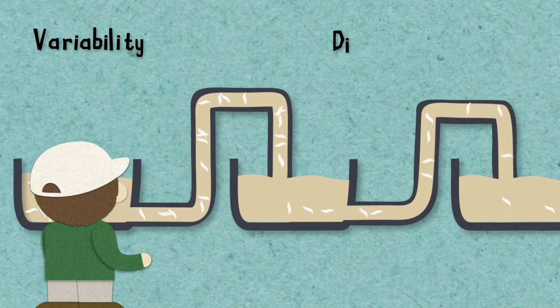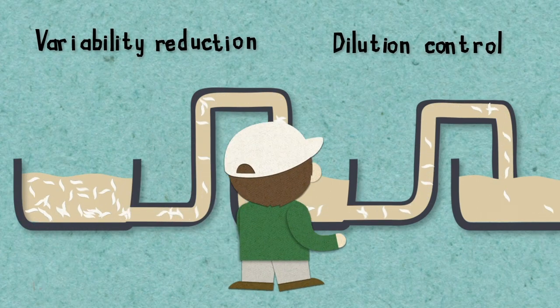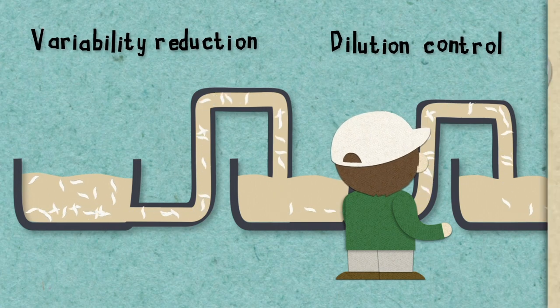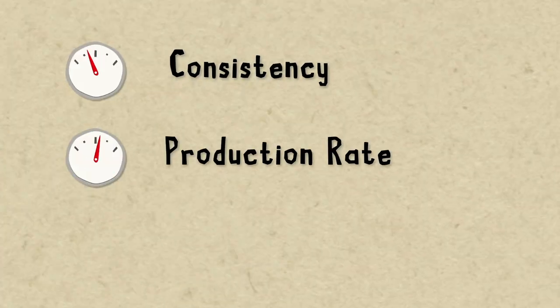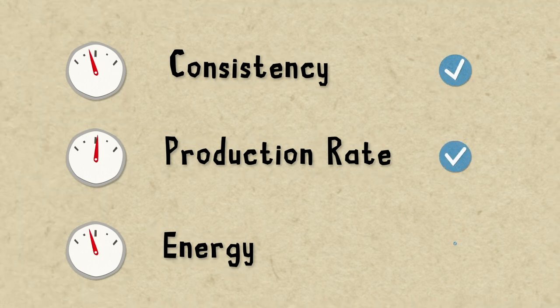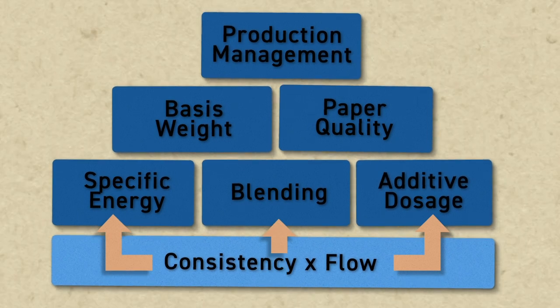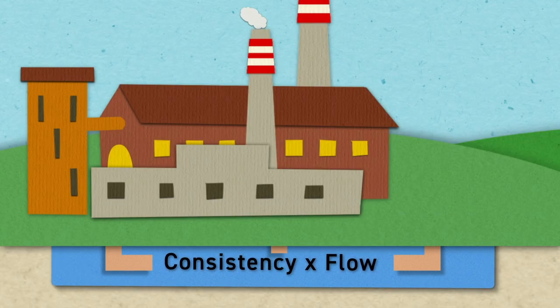Consistency is measured at many points to allow for variability reduction and detecting changes that could impact the process. Having good consistency controls permits management of other variables in the papermaking process, such as production rate, chemical dosage, and specific refining energy to achieve end product quality.